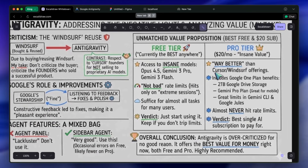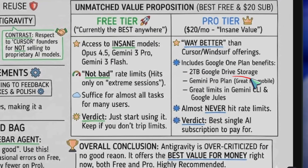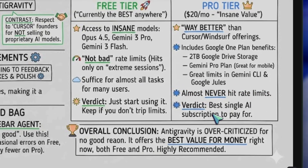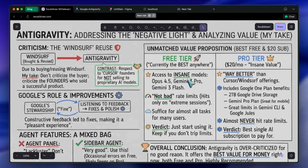In the pro plan, you get things like 2 terabytes of Google Drive storage, the Gemini Pro plan, which is great for mobile usage. You also get great limits in Gemini CLI and great limits in Google Jules. It's an insane value for money, in my opinion, if you want to pay for just one AI subscription. And I'd say that you don't even need to pay that — just start using it. If you don't trip the rate limits, then just keep using the free tier.